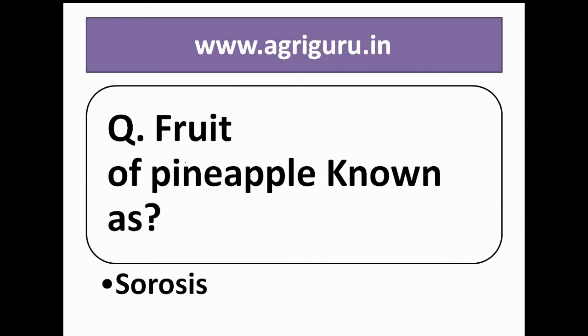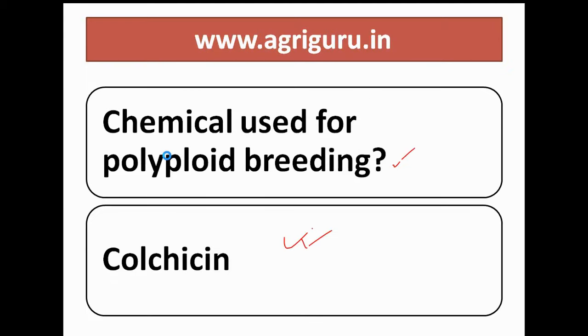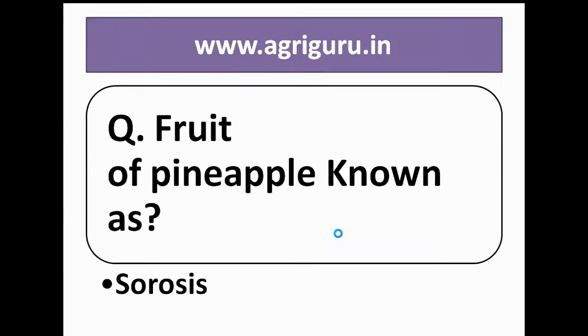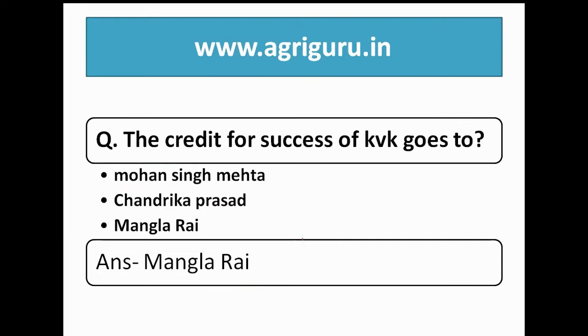Question number 22: the chemical used for polyploid breeding is colchicine. Question number 25: the fruit of pineapple is known as what? The answer is sorosis.